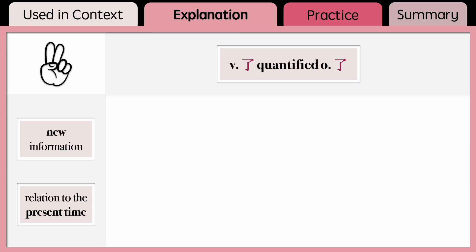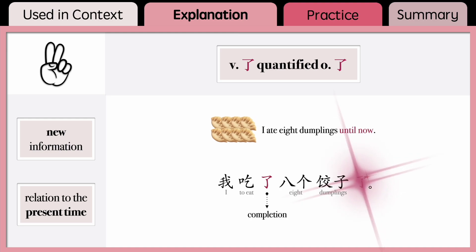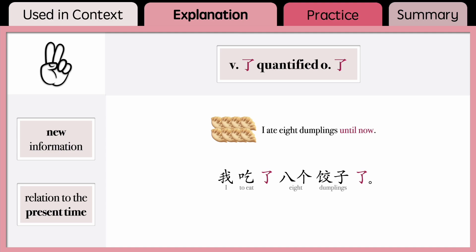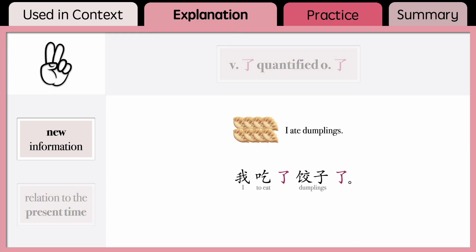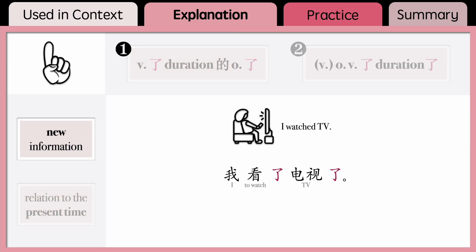For another example with a quantified object, to say 'I ate eight dumplings,' you can say 我吃了八个饺子. Without 了 at the end of the sentence, it doesn't express relation to the present time. But if you place 了 at the end, 我吃了八个饺子了 prompts new information that I ate eight dumplings until now, expressing the relation to the present time. Note that the action must have quantified objects. If the objects are not quantified, the sentence only prompts new information — for example, 我吃了饺子了 does not express relation to the present time; you are just prompting the new information that you ate the dumplings. Similarly, with the first case, if you don't talk about the duration, 我看了电视了 simply prompts the perceived new information and has no relation to the present time.